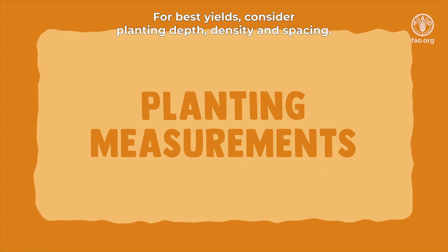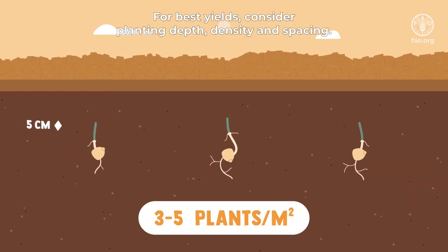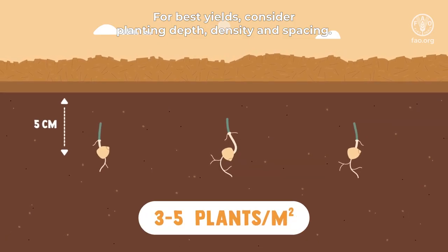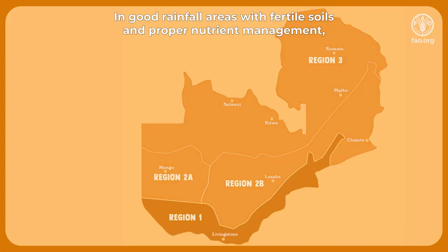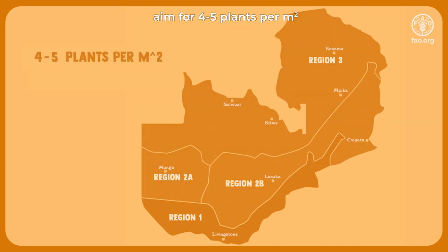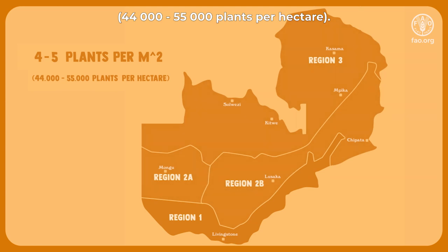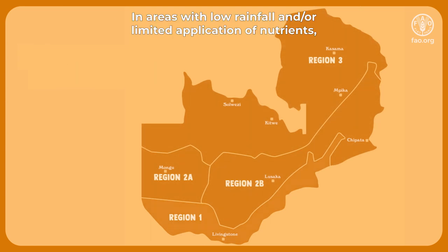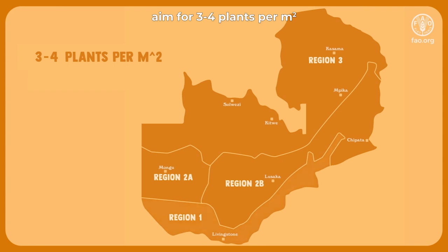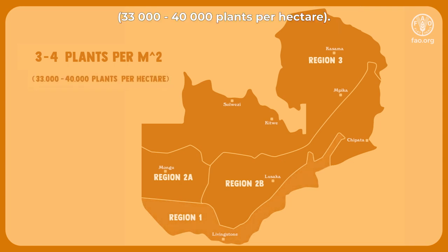For best yields, consider planting depth, density and spacing. In good rainfall areas with fertile soils and proper nutrient management, aim for four to five plants per square meter, 44,000 to 55,000 plants per hectare. In areas with low rainfall and/or limited application of nutrients, aim for three to four plants per square meter, 33,000 to 40,000 plants per hectare.